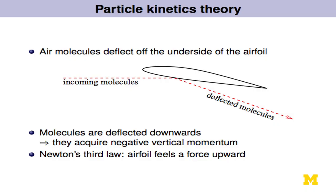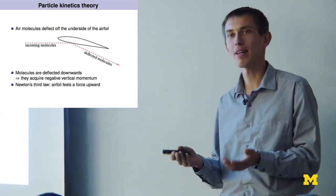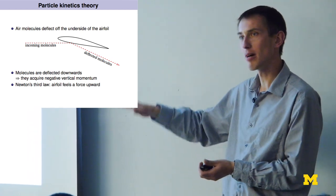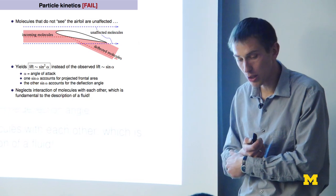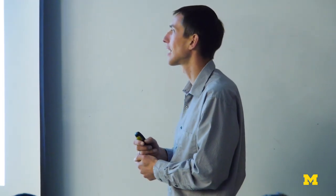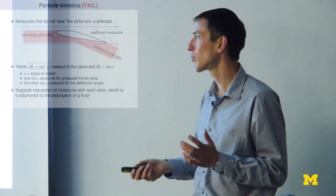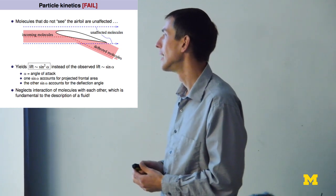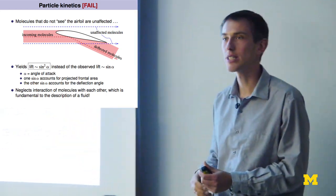Another explanation: particle kinetic theory, where molecules bounce off the airfoil, get deflected downwards, you acquire negative vertical momentum, and feel a force upward. This is more intuitive — kind of like the rocket explanation. But the problem is that molecules not seeing the airfoil are assumed unaffected. The math gives lift proportional to the sine of the angle of attack squared, which is not what we observe. We observe a linear relationship between lift and angle of attack. What's missing is that air molecules aren't independent — they interact with each other, and the continuum must be taken into account.